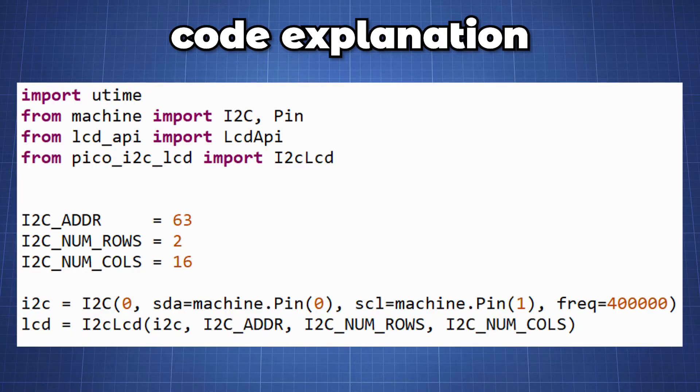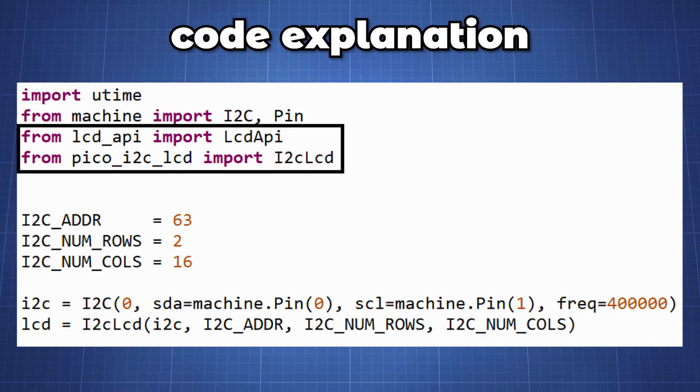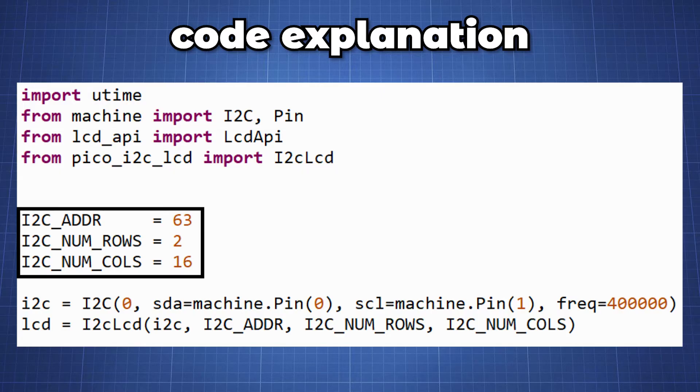Now let's look at the code. Here we import the utime library to use the sleep function for delay and from the machine we import the I2C and Pin function. We then import the two libraries we saved on the Pico and then set our address of the I2C which in my case was 63. Then set the number of rows and columns.